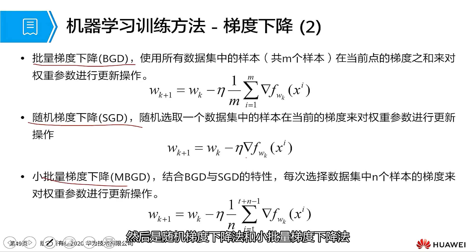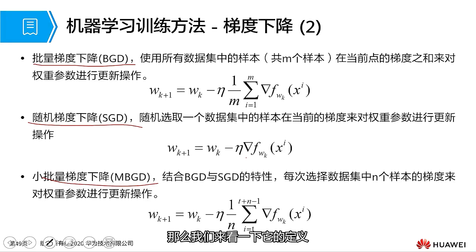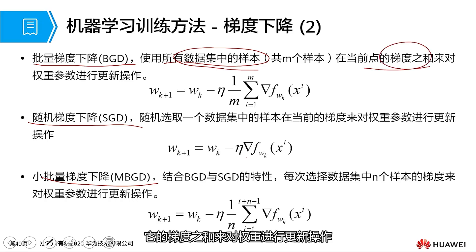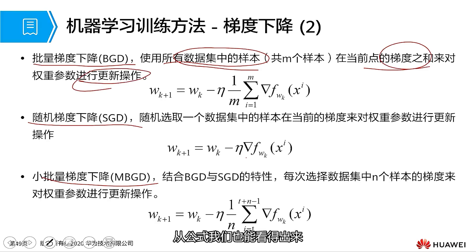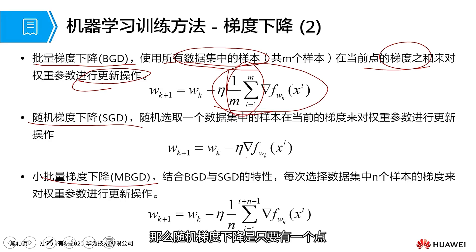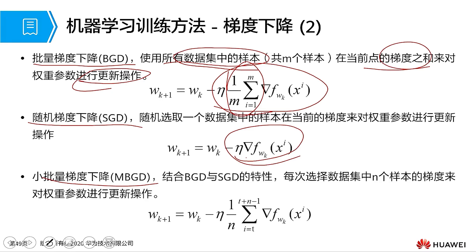Let's take a look at other variations of gradient descent. First, batch gradient descent. Then there are stochastic gradient descent and mini-batch gradient descent. Batch gradient descent refers to using all samples in the dataset — updating the weights by summing their gradients. From the formula we can see it requires a sum and then an average, then proceeding to complete the update operation.